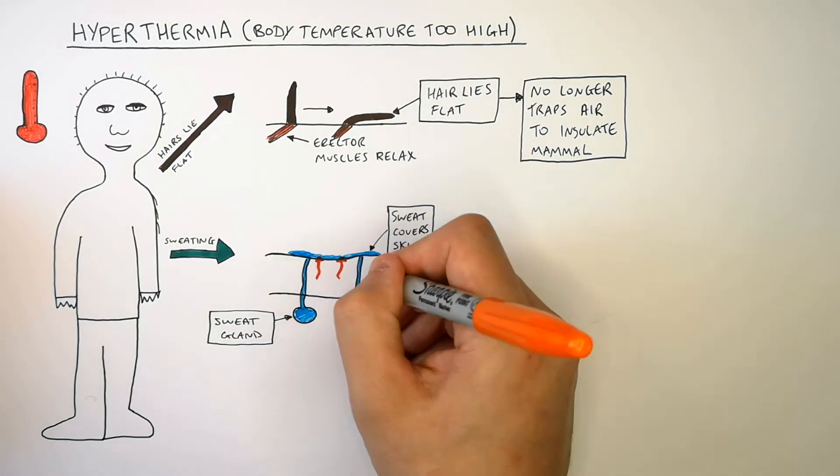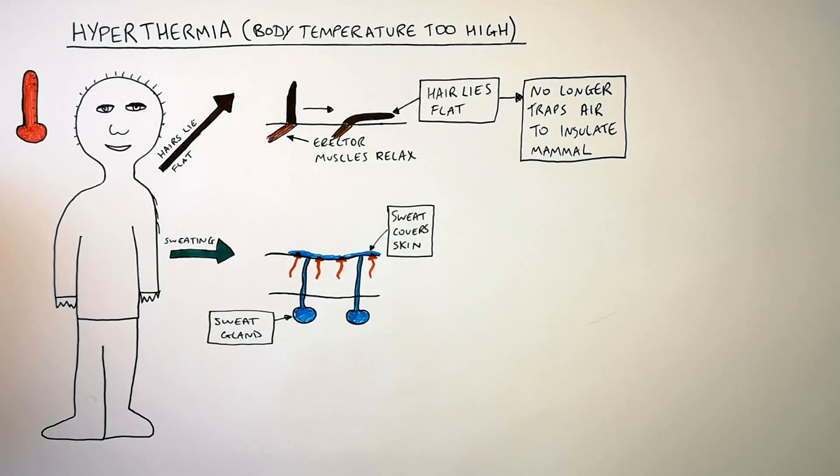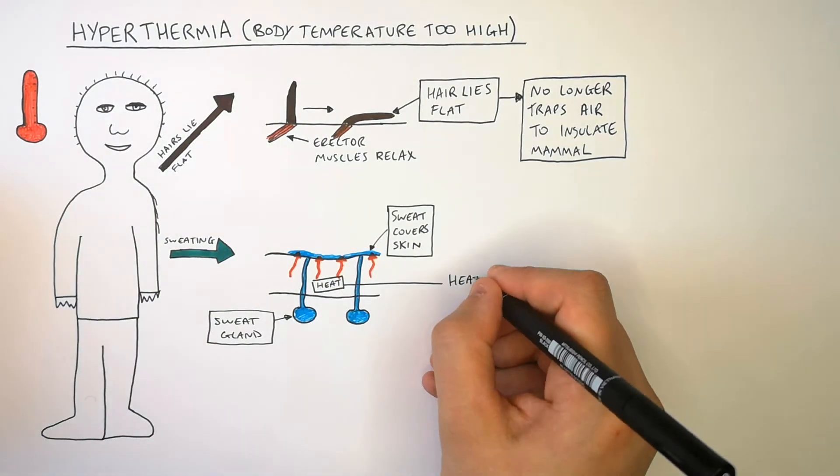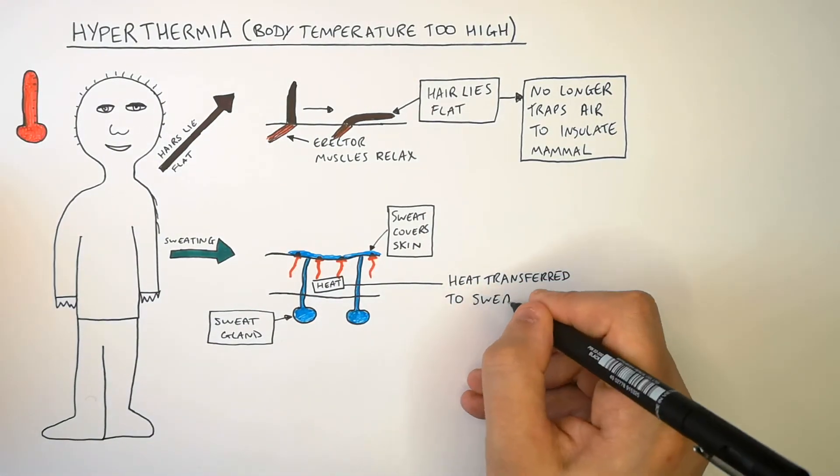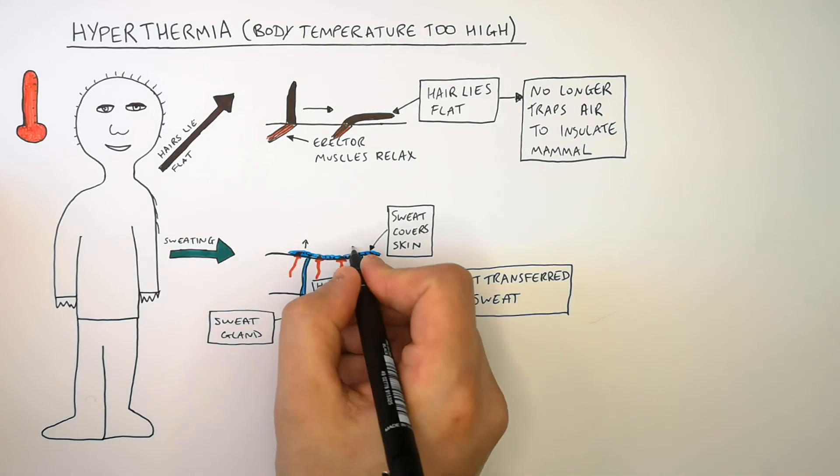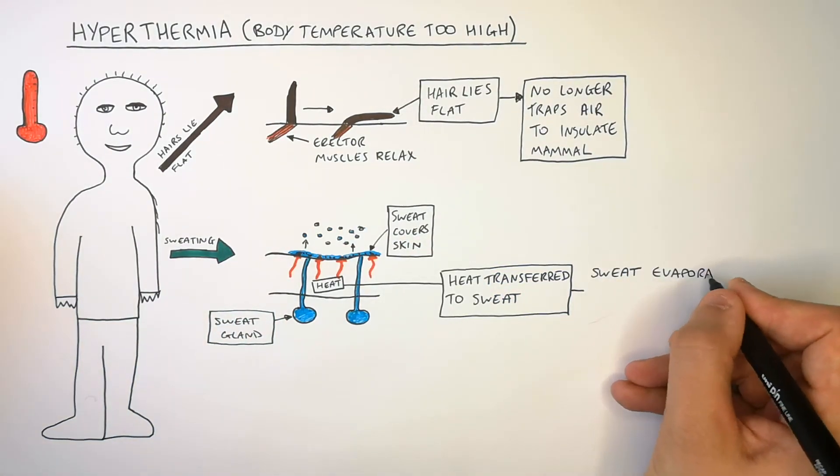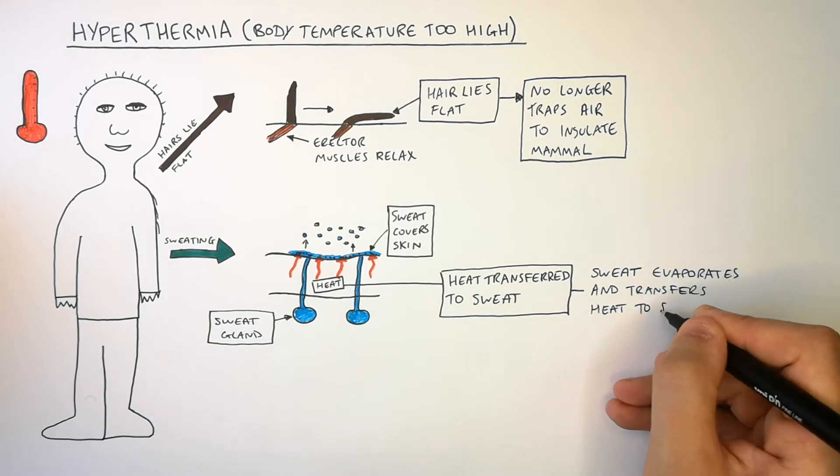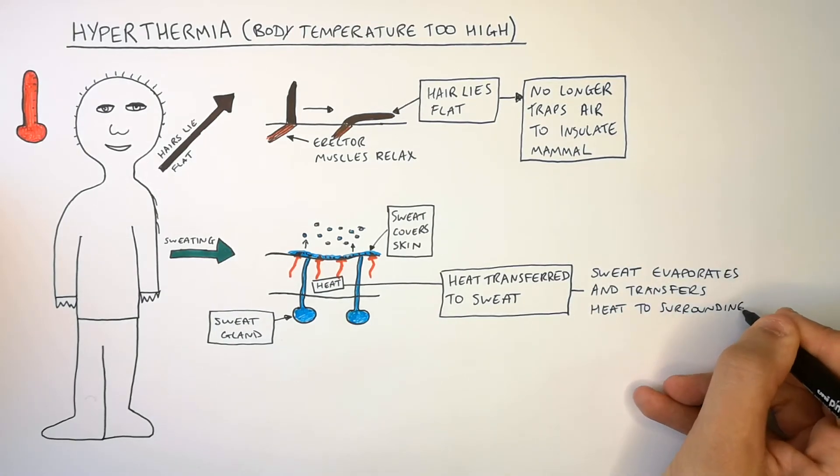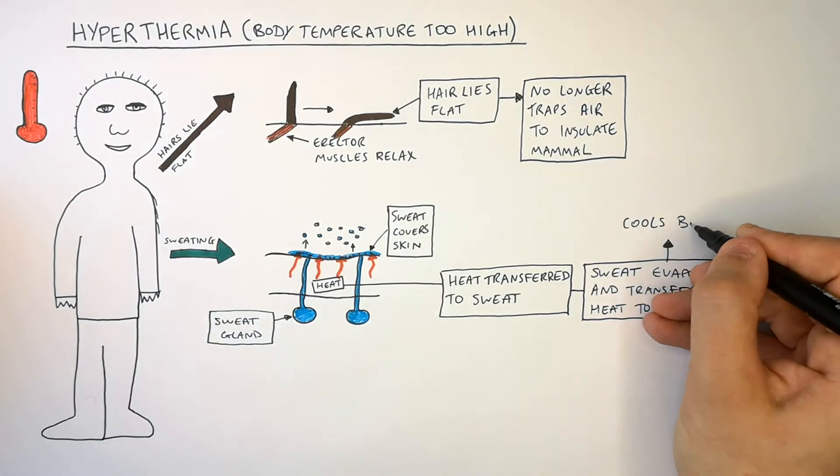What then happens is heat from our body is then transferred into the sweat. This causes the sweat to evaporate. So when the sweat evaporates it transfers the heat from our body into the atmosphere surrounding us. This cools the body down.